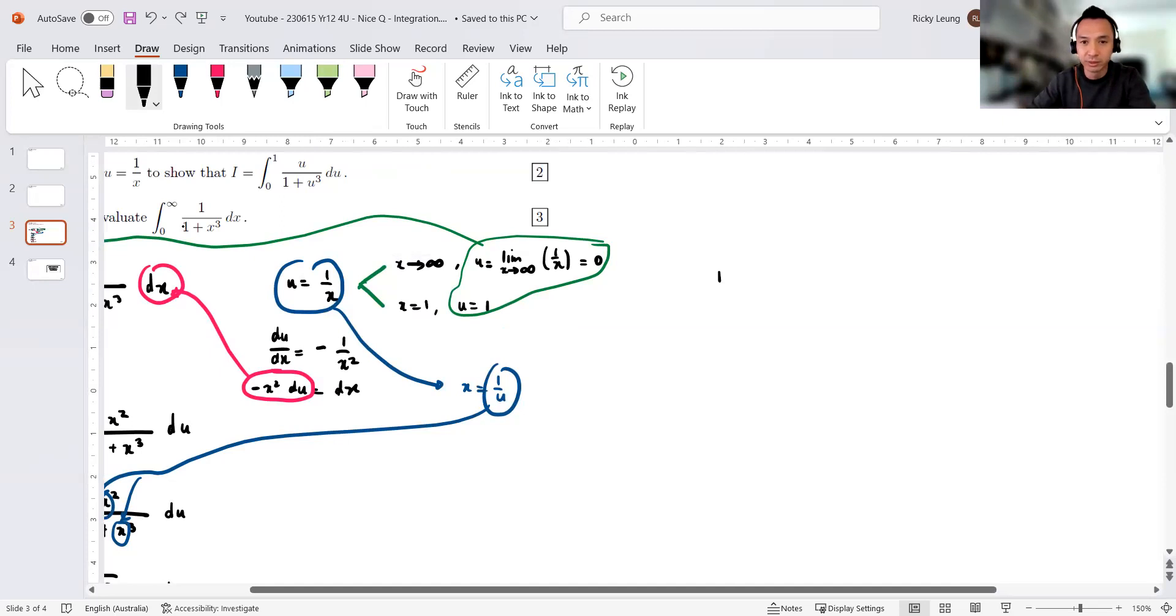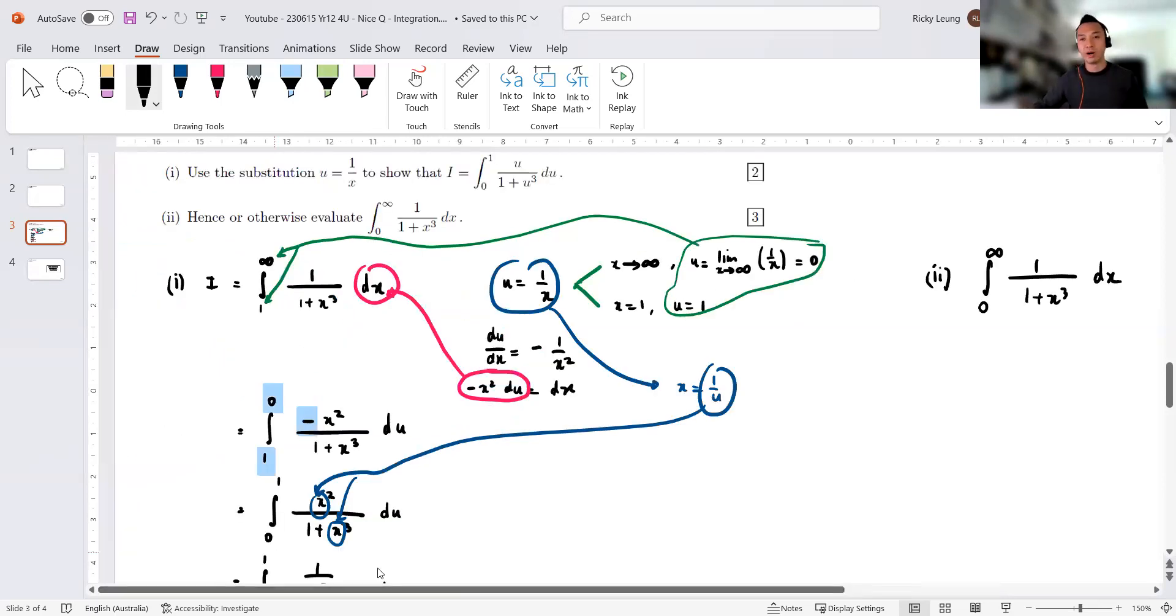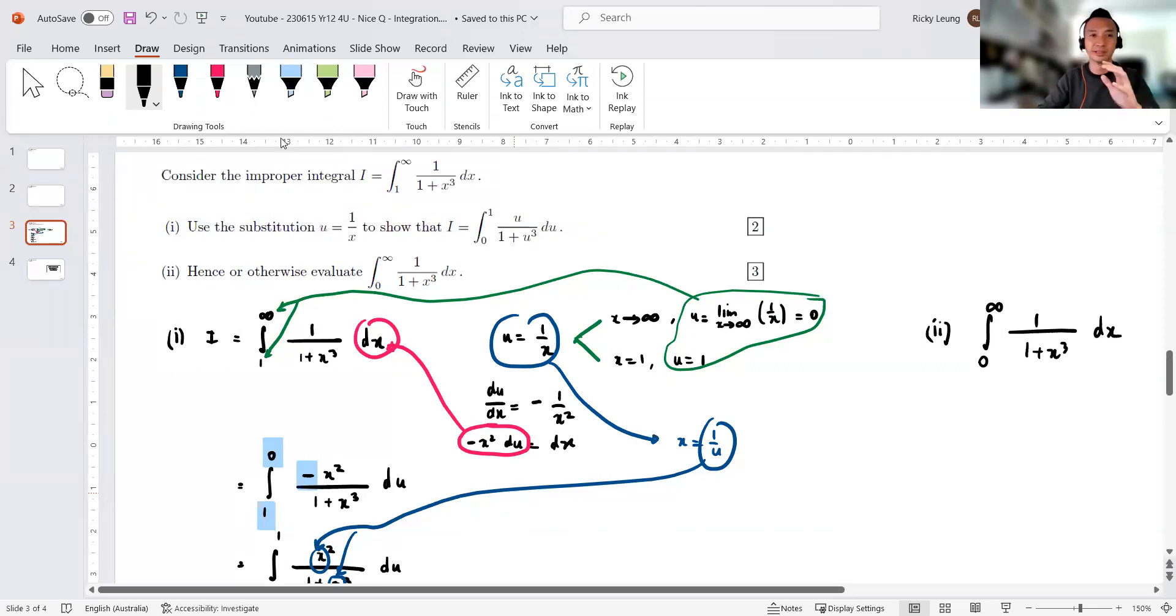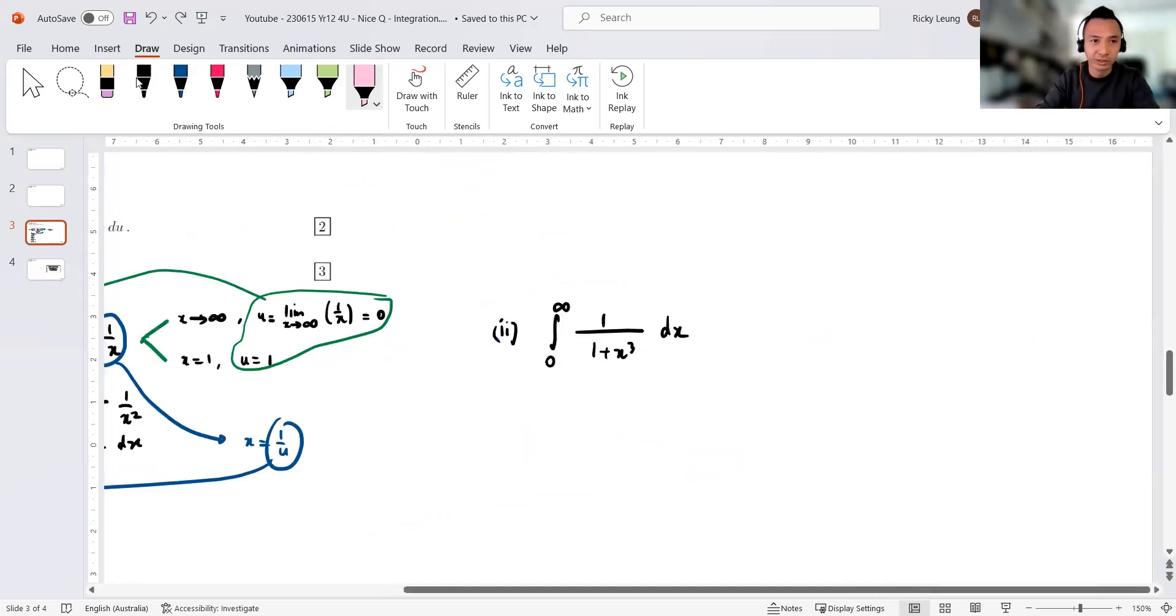All right, now hence or otherwise finish it off with zero to infinity. So part B, part two rather, okay? Zero to infinity of the same integral dx. Now in this question, it's worth highlighting: it's all to do with the limits. The key is the limits. Look at this. In my eye, the limit was from one to infinity. In the question, it's from zero to infinity. So you think it's a smart idea to split the limit to zero to one and then one to infinity, and then I can use a bit from above, right?